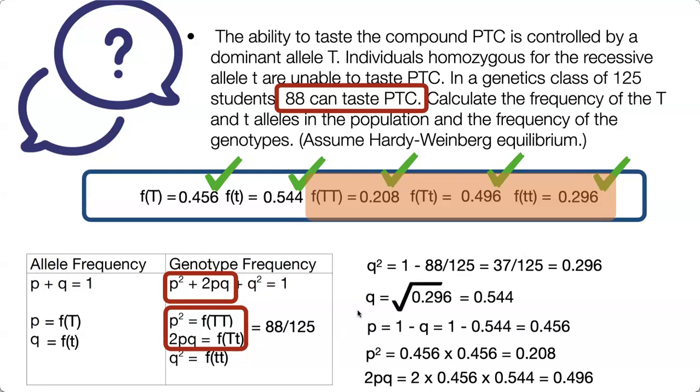So that's how you answer this question. And these are all of the allele frequencies and the genotype frequencies.